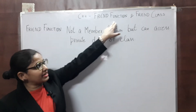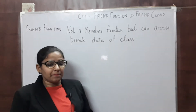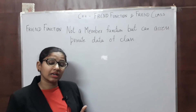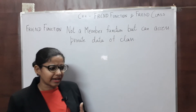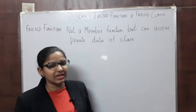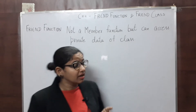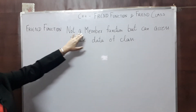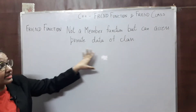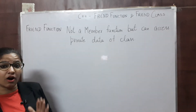Good morning guys, let's see friend function and friend class in C++. As we know, private data members of a class cannot be accessed outside the class. Practically, we access private data members using member functions. But in C++, we have another concept — the friend function. A friend function is not a member function but can access private data of a class.